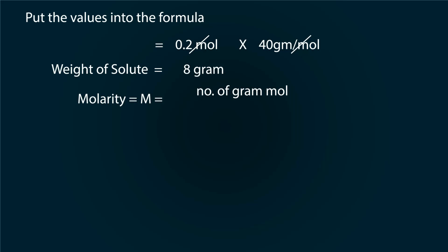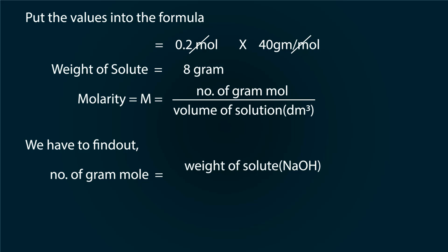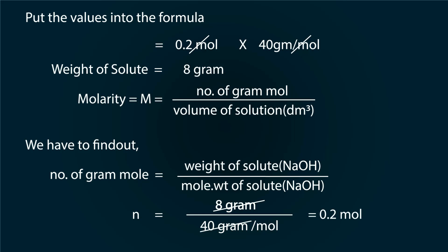So molarity is equal to number of gram moles divided by volume of solution in dm cube. So we have to find out the number of gram moles which is equal to weight of solute divided by its molecular weight. So N is equal to 8 divided by 40 grams per mole. We get our value as 0.2 mol.